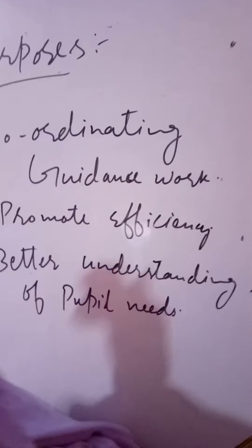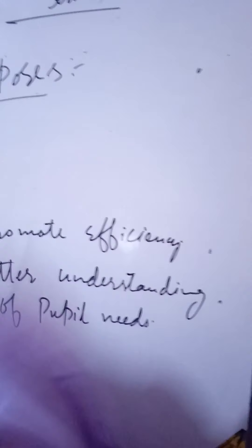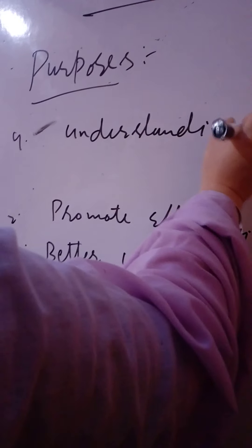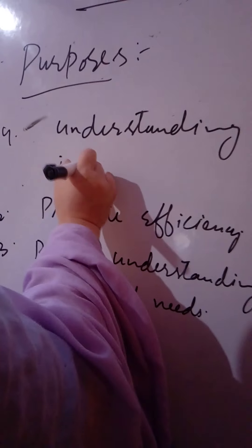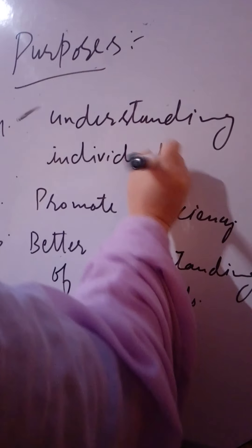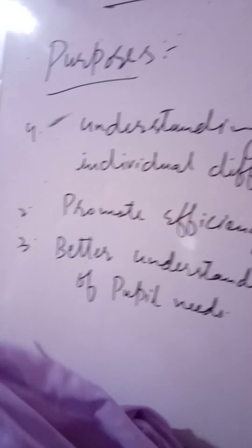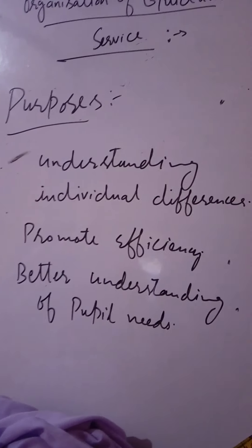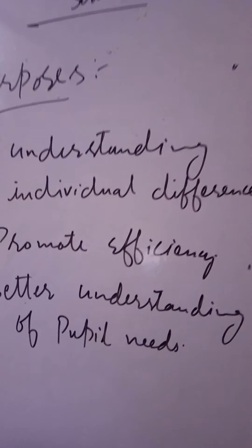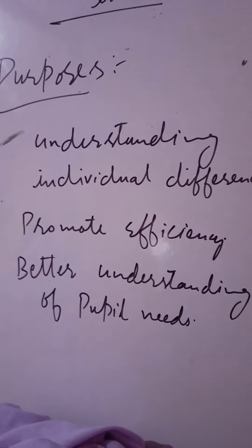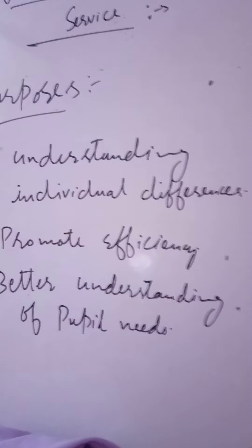Next is understanding individual differences. Organizing guidance services also helps us in understanding individual differences — including capabilities, potentiality, innate capability, interests, and needs. So in order to understand the individual differences between each and every person, we need to organize the guidance service.